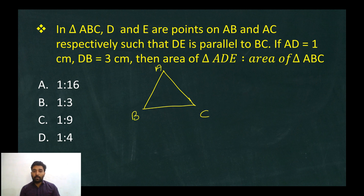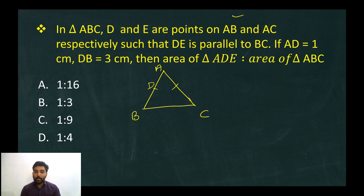ABC is a triangle. DE is drawn where D is a point on AB and E is a point on AC. DE is parallel to BC.